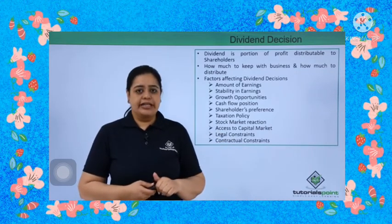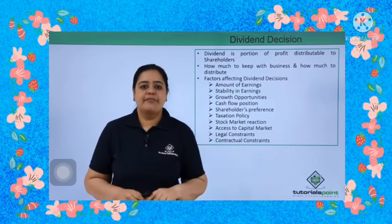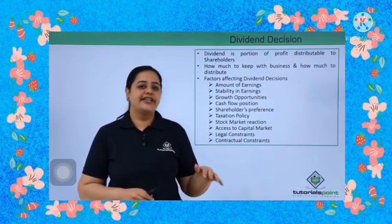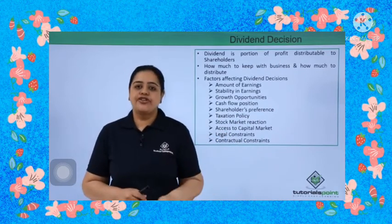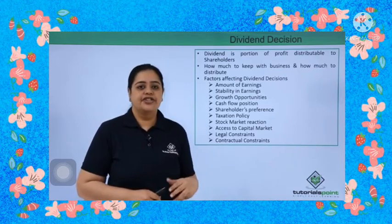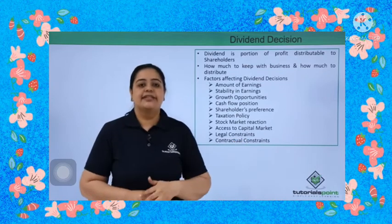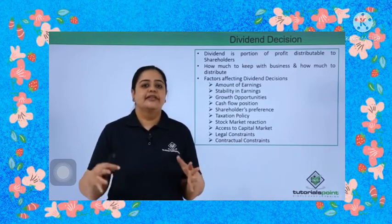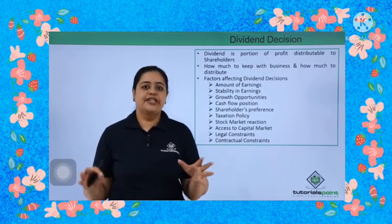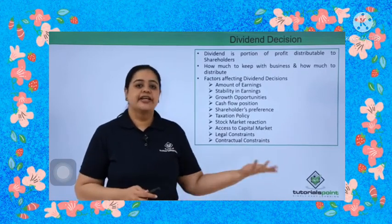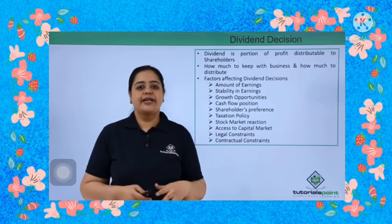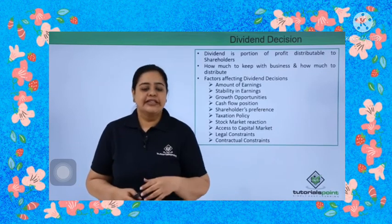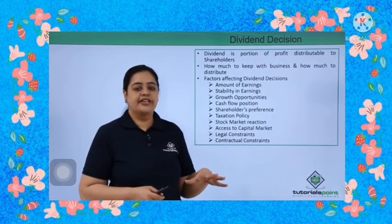Access to capital market is another factor — if the company has easy access to capital markets and can raise funds from anywhere, it would not be concerned about retaining earnings and would prefer to distribute wealth to shareholders. Legal constraints can restrict the dividend to be distributed, so decisions must be made accordingly. Contractual constraints also apply — for example, when taking a loan from a bank, the bank may stipulate that dividends cannot be distributed, which affects the dividend decision.